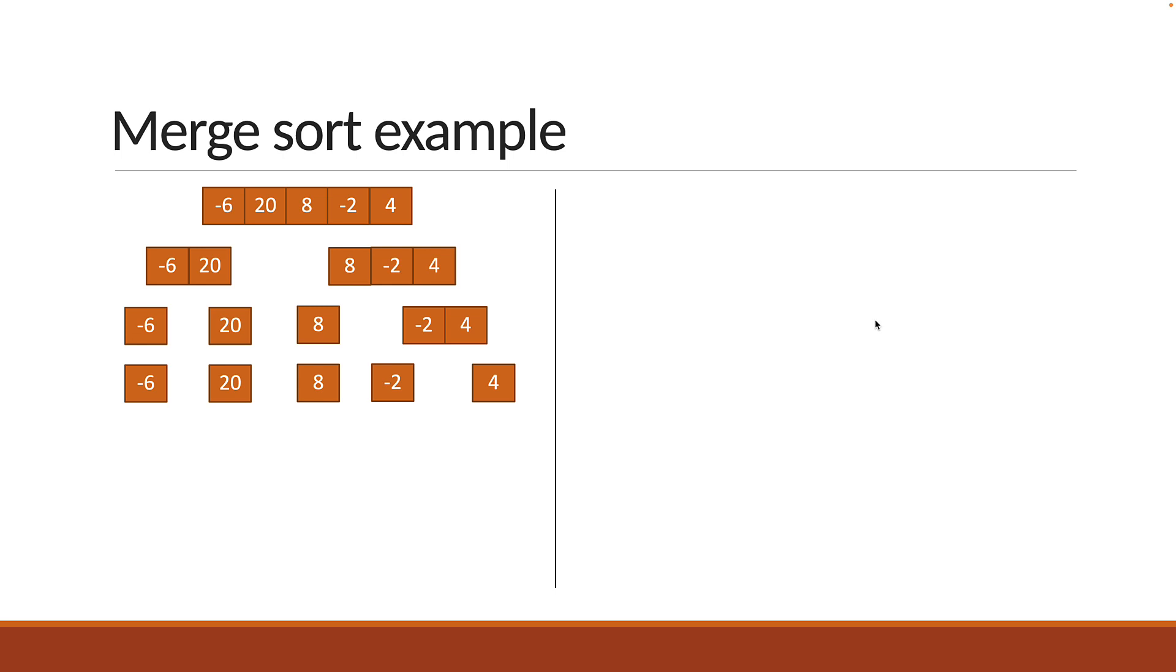For step 2, we merge the individual sub-arrays into new sub-arrays while ensuring the elements are sorted. Here is how it works. We take the two arrays and a temporary empty array to hold the elements as they are sorted.